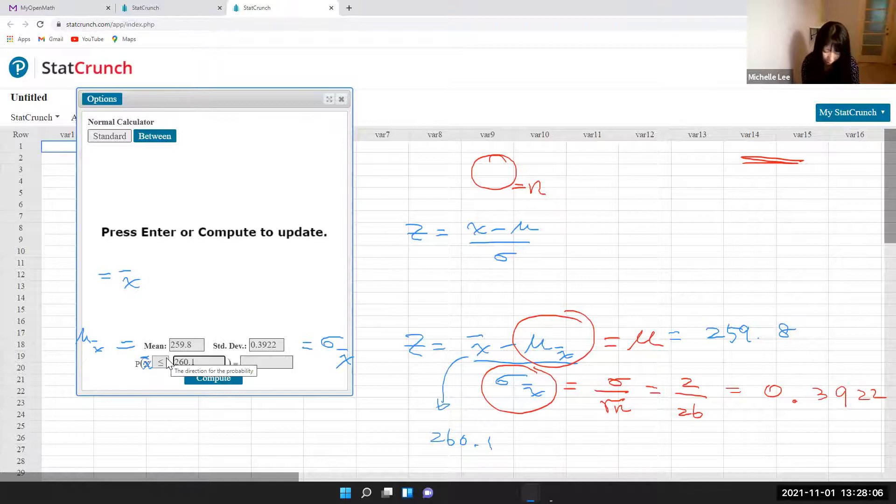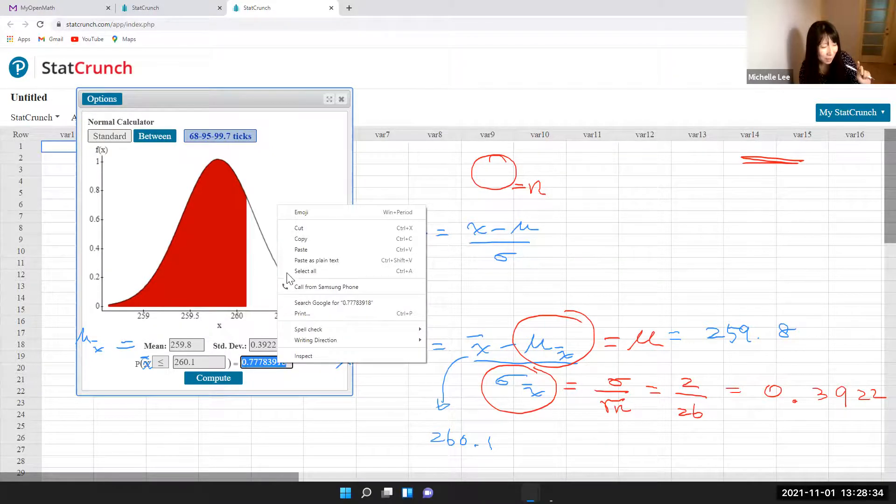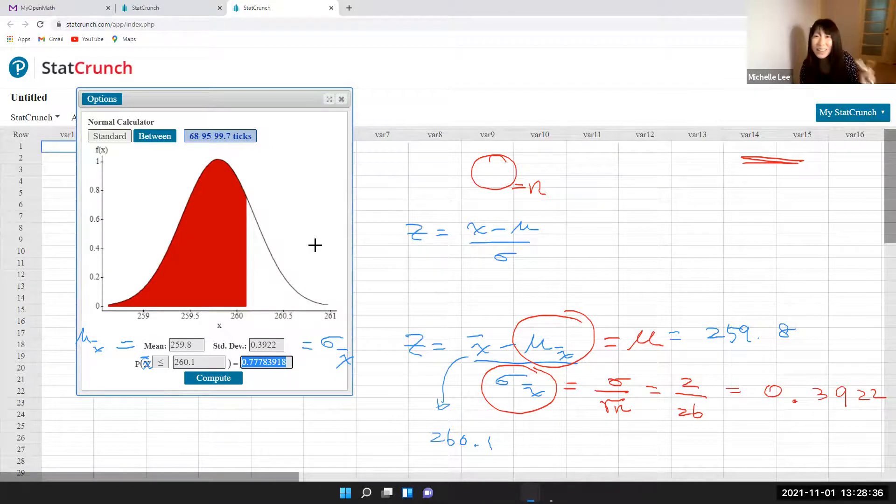So let us do this one, maybe clear a little bit. Compute. Then this will be the answer. So 0.00, let me highlight, 0.7773918. So let us make a copy, then paste.